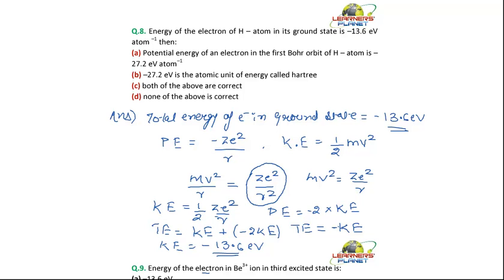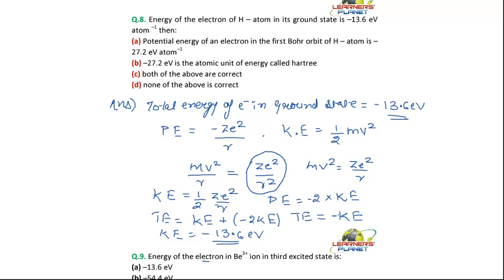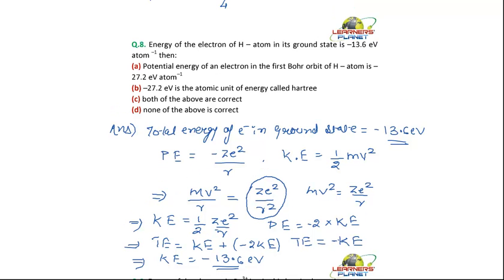Now, can you find the potential energy? The potential energy is 2 multiplied by the kinetic energy. So the answer for this question is 27.2 electron volts. The first option is correct.